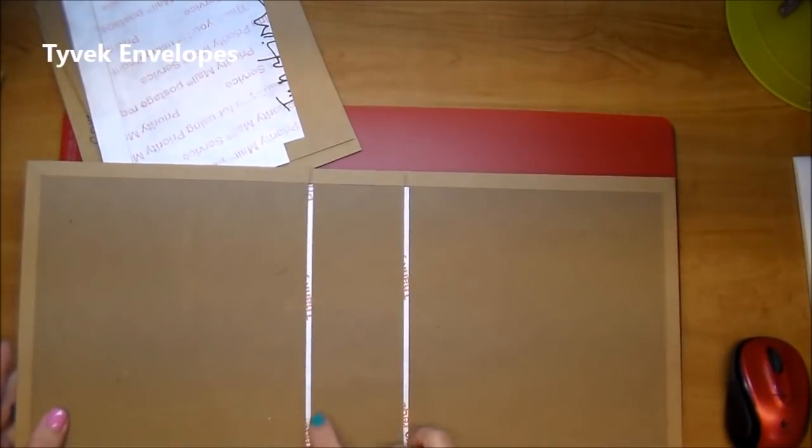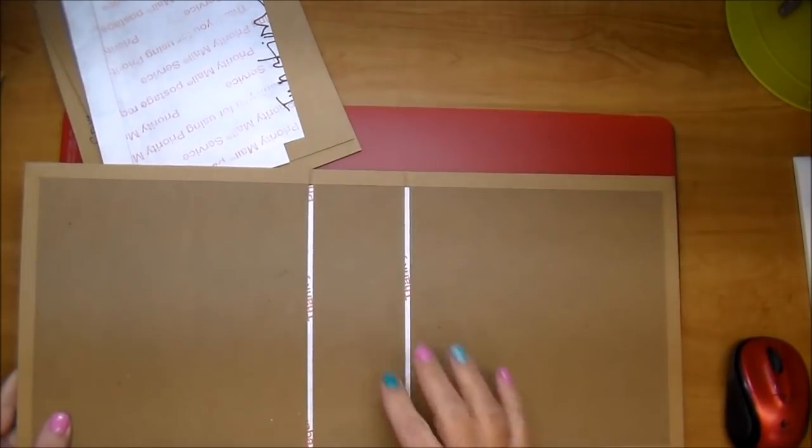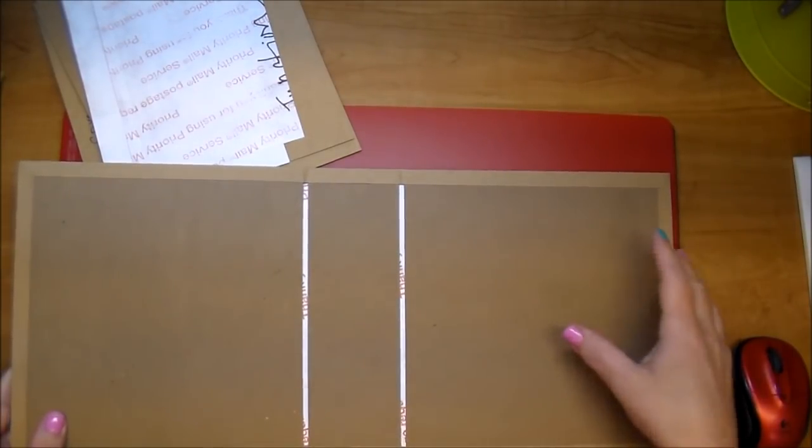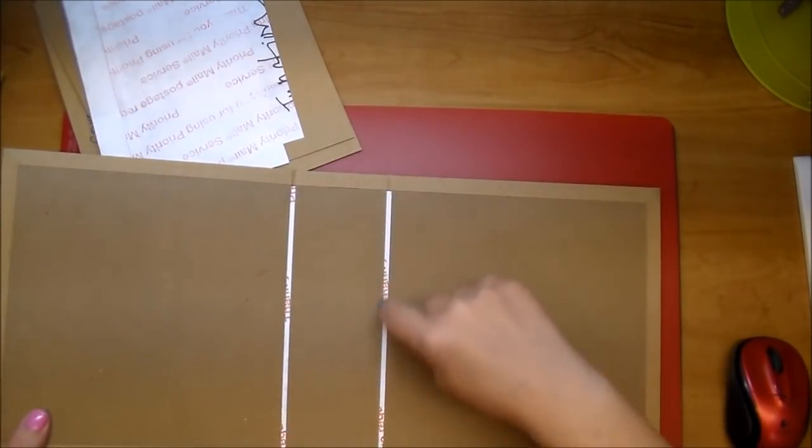So the Tyvek goes underneath your chipboard pieces and runs along the spine of your album where you open and close your album a lot. That's going to help with the stability of your paper not ripping because it's right there in those creases.